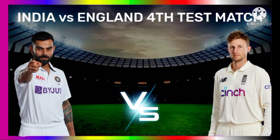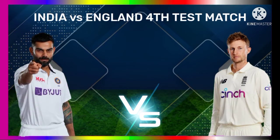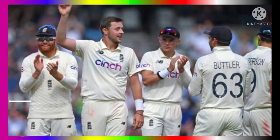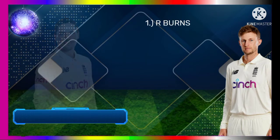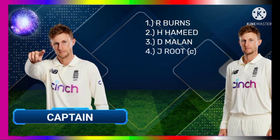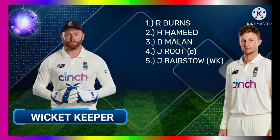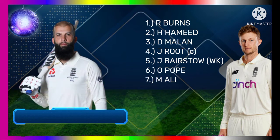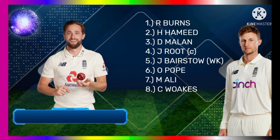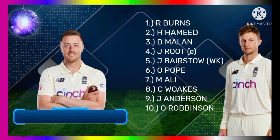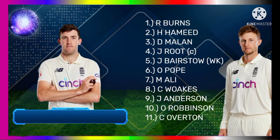India vs England 4th Test match details: Date 2nd September, time 3:30 PM Indian time, venue Kennington Oval. England's final playing 11: 1. Rory Burns, 2. Hasib Hamid, 3. David Malan, 4. Captain Joe Root, 5. Wicketkeeper Jonny Bairstow, 6. Oli Pope, 7. Moeen Ali, 8. Chris Woakes, 9. James Anderson, 10. Oli Robinson, 11. Craig Overton.